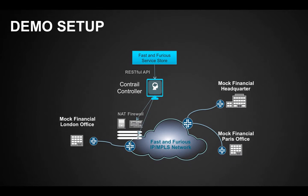In this demo, we will show you a fictitious service provider called Fast and Furious, who leverages Contrail technology for NFV and offers a series of network services on demand from their online service store. In the back end, once the online service order is complete, a set of Contrail RESTful APIs are invoked to automatically provision the virtual services and provide dynamic service chaining.